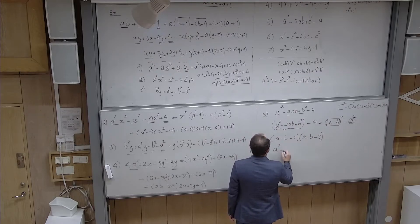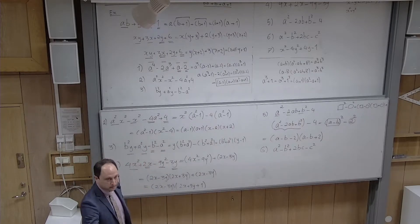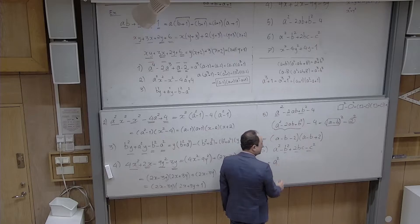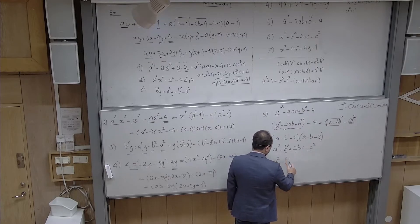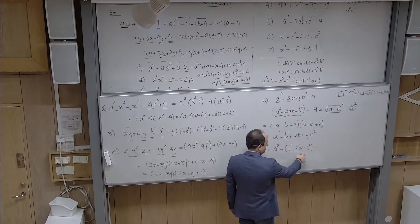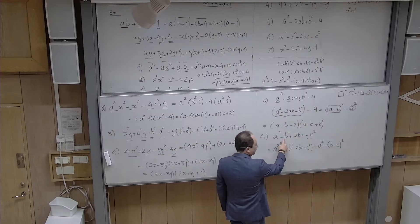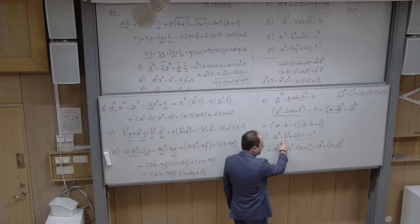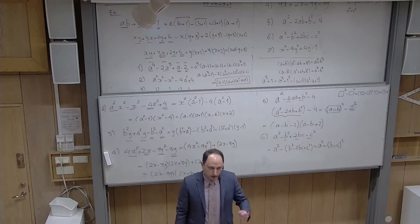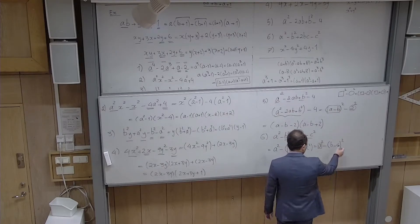You might wonder if 16 − 12x + 9x² can be factorized further. To check: calculate the discriminant delta = b² − 4ac = (−12)² − 4(9)(16) = 144 − 576, which is clearly negative. When delta is negative, the trinomial has no real roots and cannot be factorized further over the real numbers. So 16 − 12x + 9x² is the stopping point. Not all trinomials can be factorized — only those with real roots. If delta is negative, we stop.